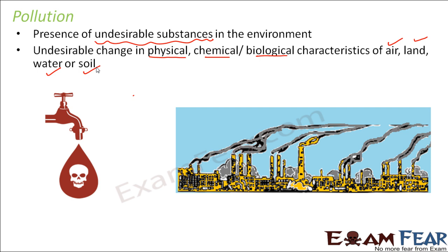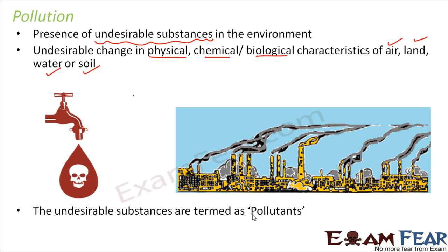Similarly, smoke coming out of various industries and factories contains a lot of dirty particles, dust, chemicals, etc. All these particles mix with the air, changing its chemical properties and making the entire air poisonous. The air surrounding many industries and factories is generally polluted because of industrial emissions. These undesirable substances that cause pollution are called pollutants.